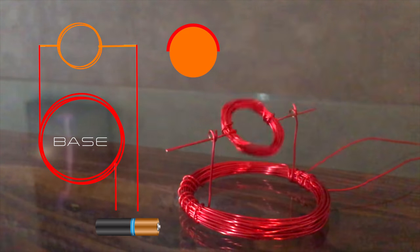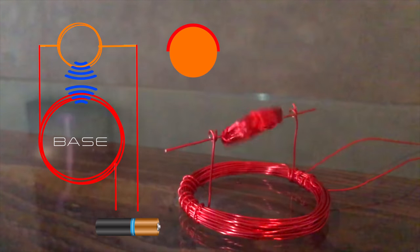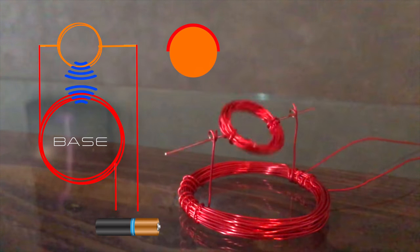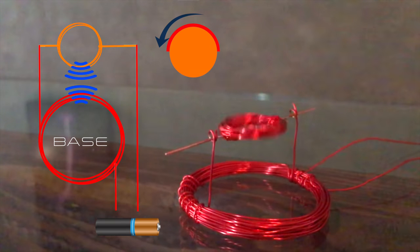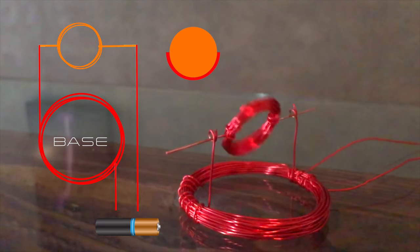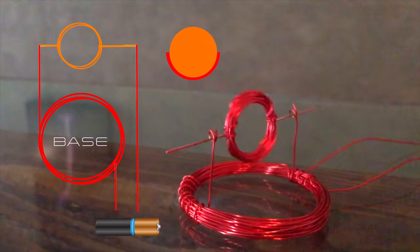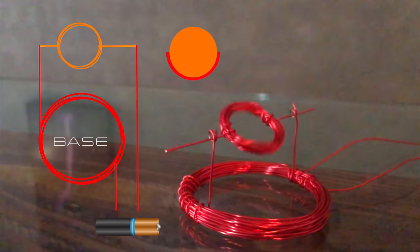However, that now means each coil has an electromagnetic field and they repel each other. So the spindle is repelled in the direction it's already spinning. Once the spindle rotates further, the enamel portion is now in contact with the base. This cuts all electrical flow, allowing the spindle to keep rotating under its own momentum.